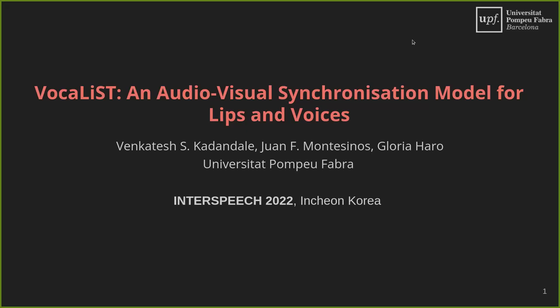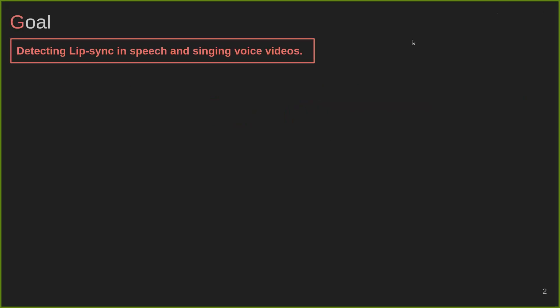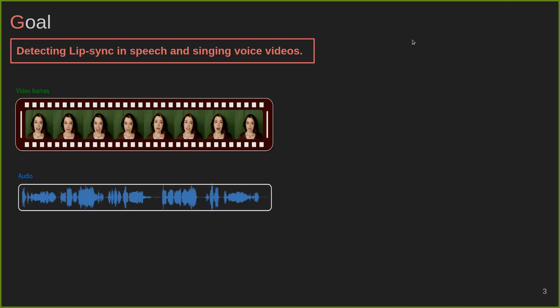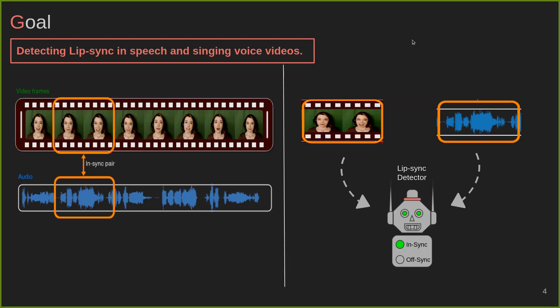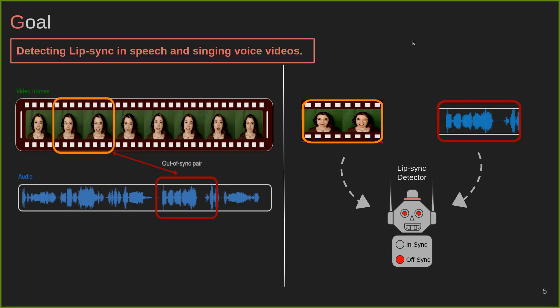Hi, I am Venkatesh. Today I will be presenting our work VOCALIST, an audio-visual synchronization model for lips and voices. The main goal of this work is to detect lip synchronization in speech and singing voice videos. For any matching pairs of video frame sequence and audio, the lip sync detector should tell that the lips motion and voice are synchronized, whereas for unmatched pairs, it should tell that they are not synchronized. In this work, we consider lip synchronization in both speech and singing voice videos.